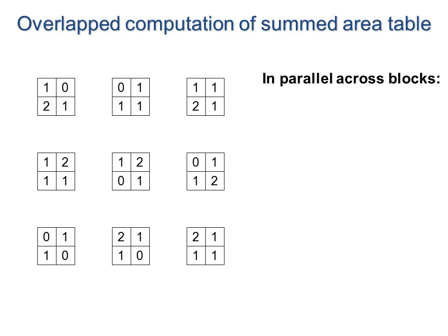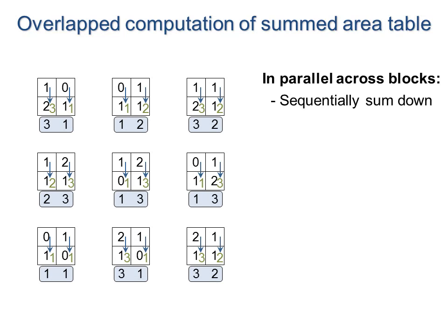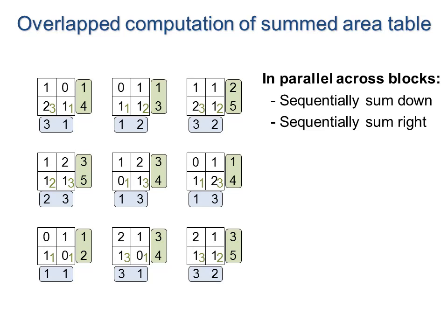The algorithm works as follows. We compute prefix sums down within each block, assigning to the lower band, and compute prefix sums to the right on those values, assigning to that band. Here are the summed regions these numbers represent.